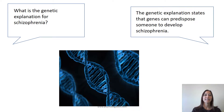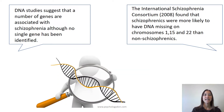The genetic explanation for schizophrenia says that genes can predispose someone to developing it. DNA studies suggest that a number of genes are associated with schizophrenia, although no single gene has been identified. The International Schizophrenia Consortium found that schizophrenics were more likely to have DNA missing on chromosomes 1, 15, and 22 compared to non-schizophrenics.